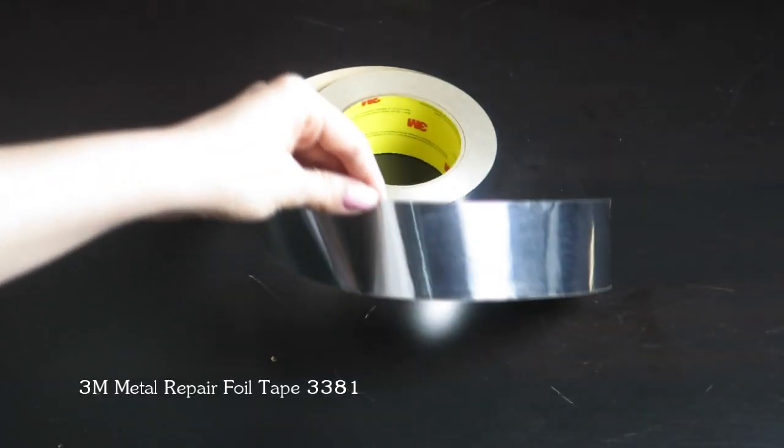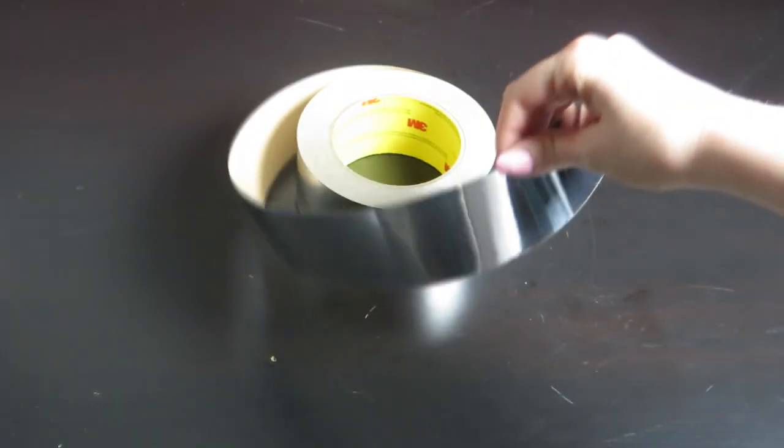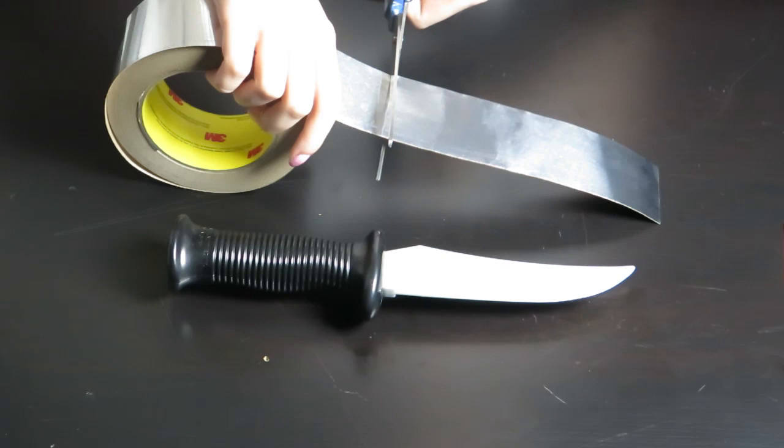To create the illusion of shiny metal, you will need aluminum foil tape. You can buy it online or find it in the plumbing section of your local hardware store.